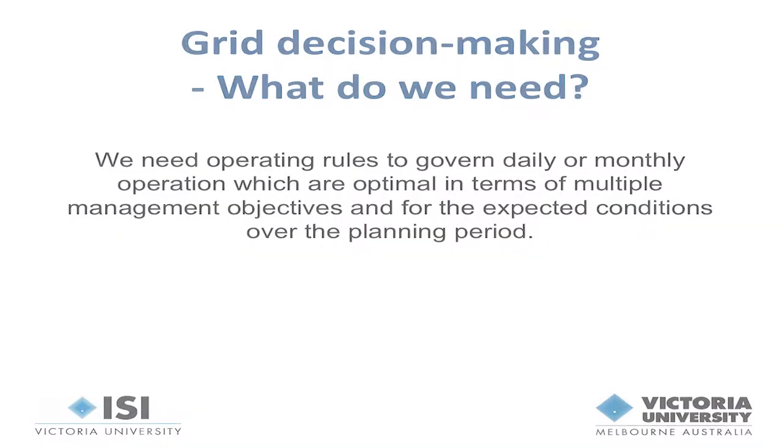Before they started, the team went to some water grid operators and asked what they actually needed in this area. The operators said they have tools that help with long-term planning — a 50-year horizon — but not much in the way of tools that help them operate these systems over a six-month to five-year period. So that's what the research looked at: questions about operating the grid rather than augmenting it. The two areas that claim to have water grids are South East Queensland and Victoria. In South East Queensland, every six months they have to review their operating rules for the next 12 months, continuously revising and planning ahead.